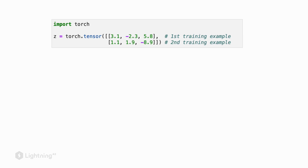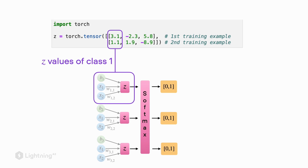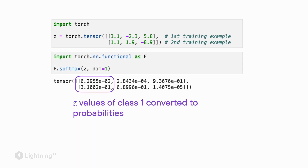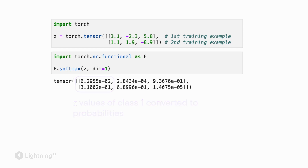In this case, we would have a training dataset consisting of two training examples and class labels 0, 1, and 2. Now let's pick out the first class label — class label 0 — which corresponds to the first set of weights in the figure. We have two rows because we have two training examples. If we then apply the Softmax activation function, we convert these net inputs into class membership probabilities.